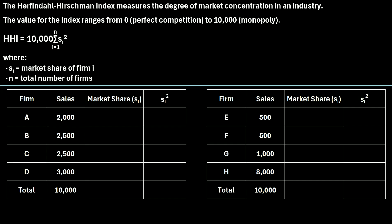In this video, I will explain how to calculate the Herfindahl-Hirschman Index. So let's start with a quick definition. The Herfindahl-Hirschman Index measures the degree of market concentration in an industry — how concentrated are the sales in a particular industry. The value for this index ranges from 0, which represents perfect competition, to 10,000, which would represent a monopoly.